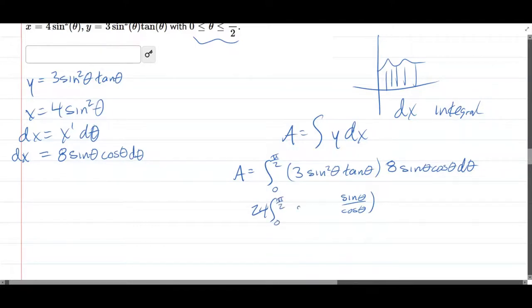So I still have my sine squared. Brought the 8 and 3 out. And I have another sine cos. Unfortunately, my cosines cancel. I say unfortunately because I was hoping for an easy u sub. And I have sine to the 4th.